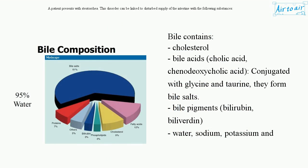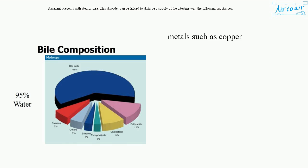Bile contains cholesterol, bile acids — colic acid and chenodeoxycholic acid conjugated with glycine and taurine, which form bile salts — bile pigments such as bilirubin and biliverdin, water, sodium, potassium, and metals such as copper.